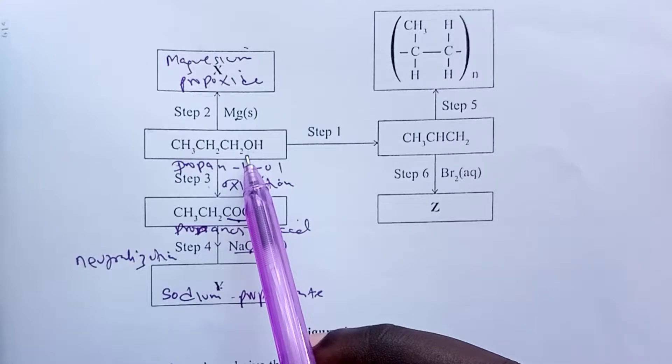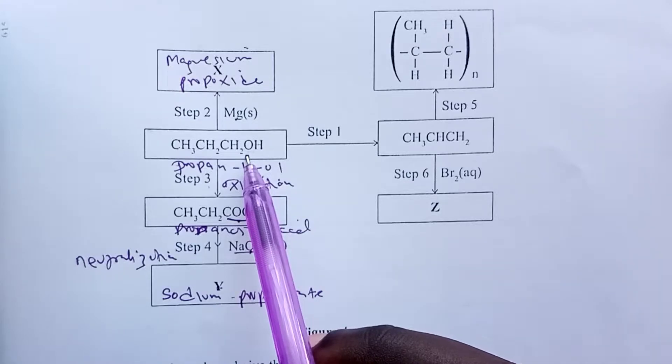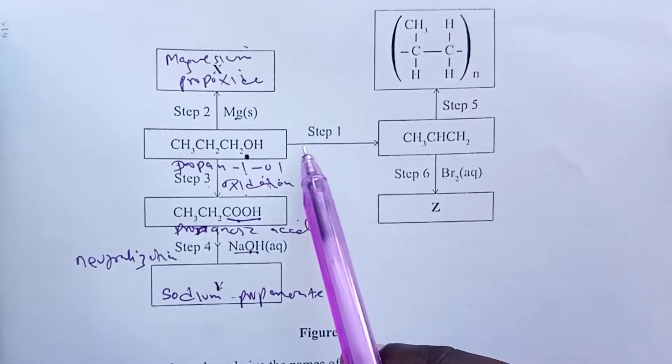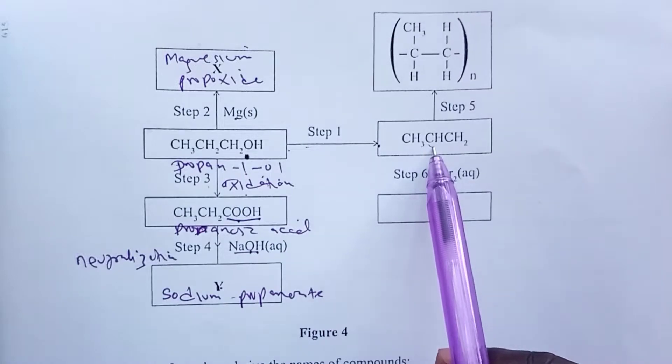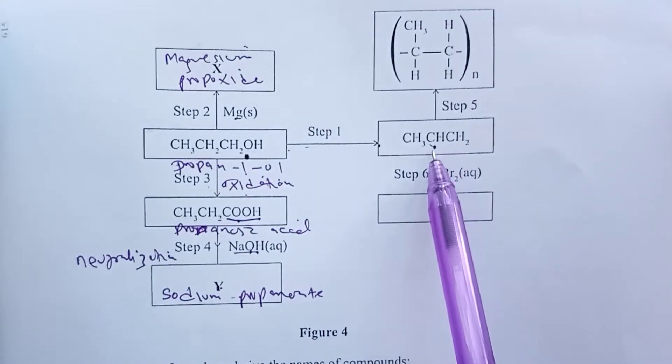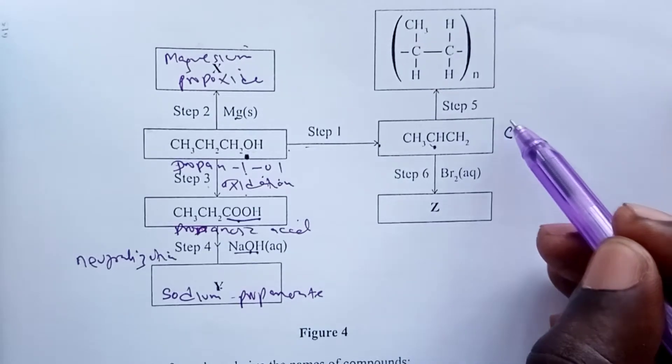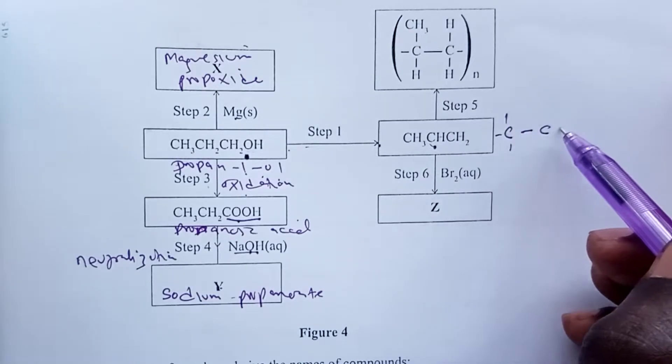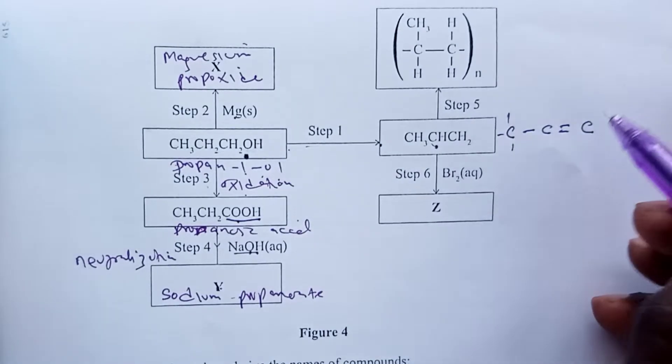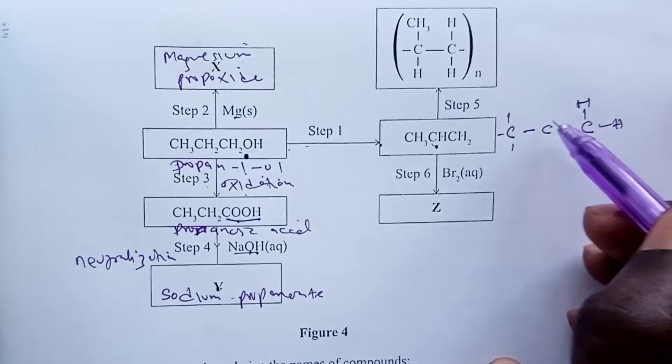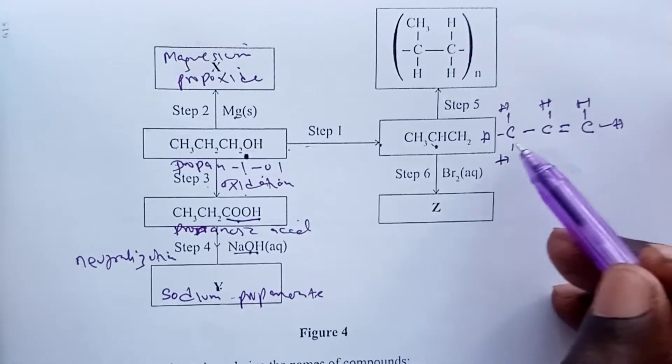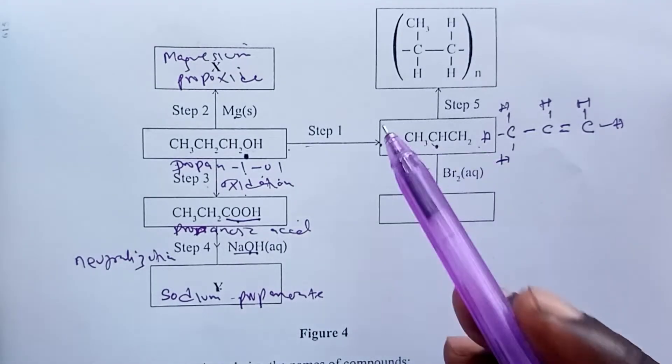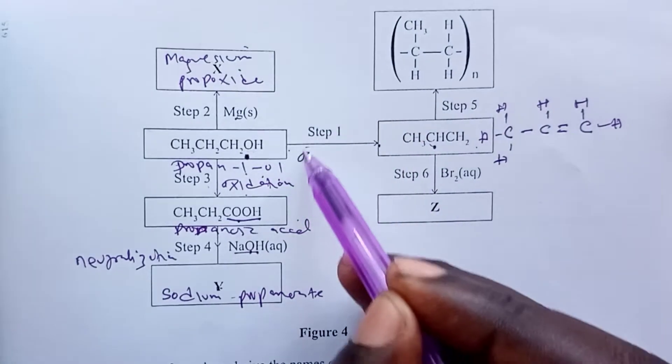If the carbon is one, methoxide; carbon is three, propoxide; four, butoxide, and so on. Good. Moving now to our right-hand side, step one: we are getting an alkene. This is an alkene. If you expand it, you would see that there is a double bond between carbon one and two starting from the right-hand side. So this is how it looks like, and this is prop-1-ene. So we are getting an alkene from an alkanol. The process is dehydration.